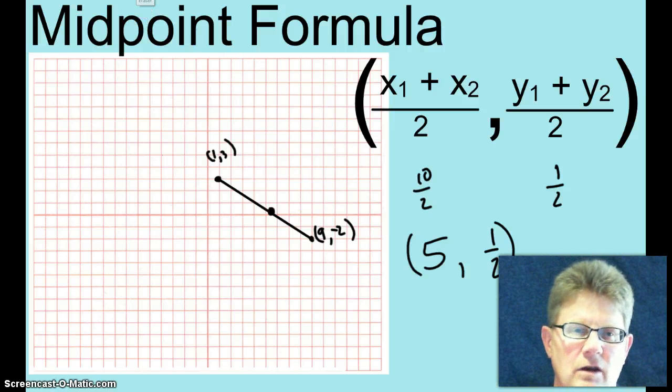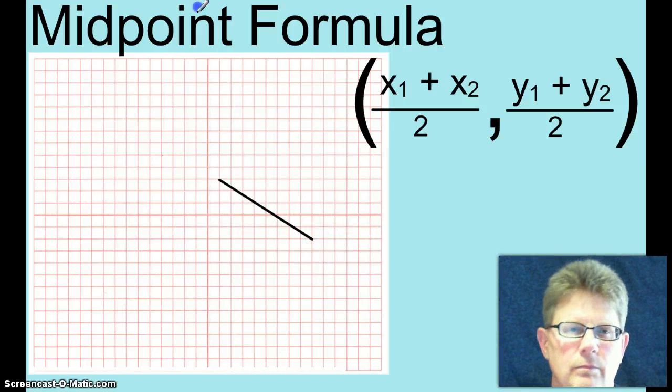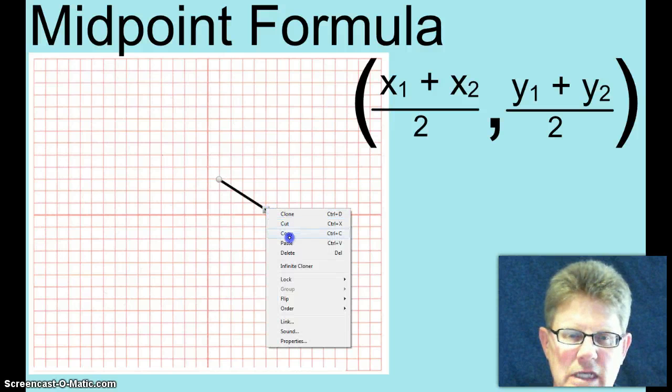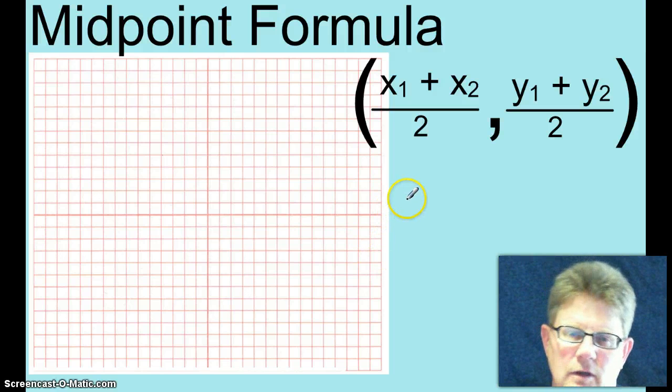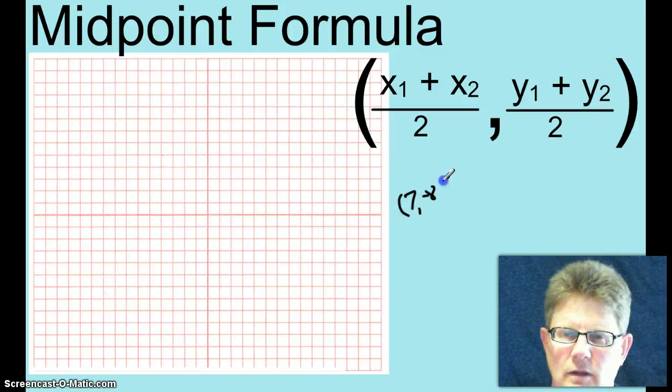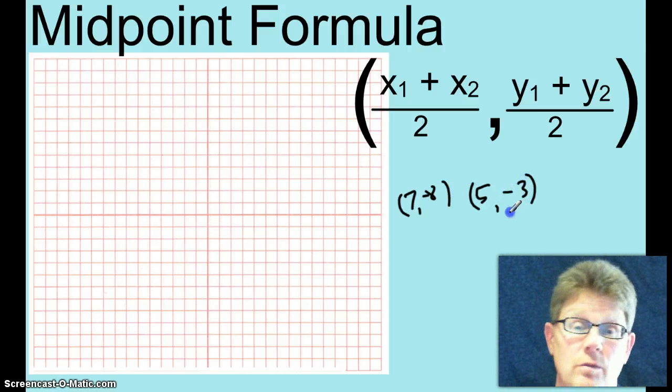Now, it's not always going to be that nice. Sometimes, they are not going to give you a picture, a graph, for you to read endpoints or anything. All they are going to give you are the coordinates of the endpoints. They are going to give you like 7, negative 8, and 5, negative 3. And they are just going to ask you for the midpoint.